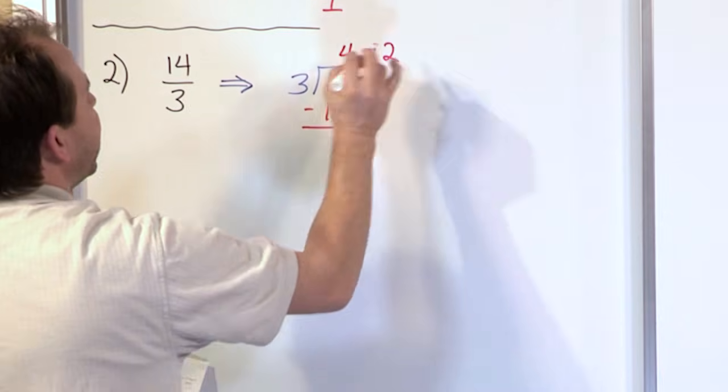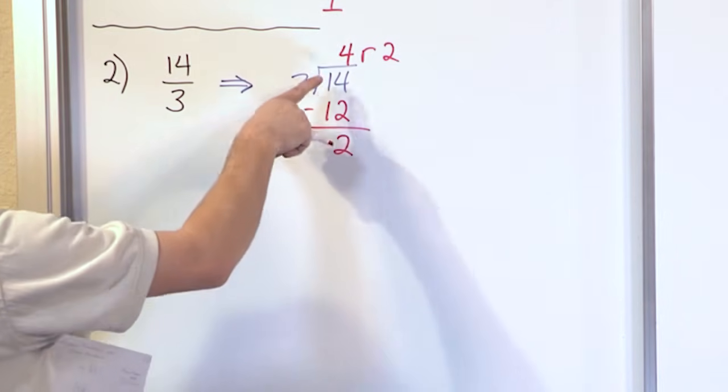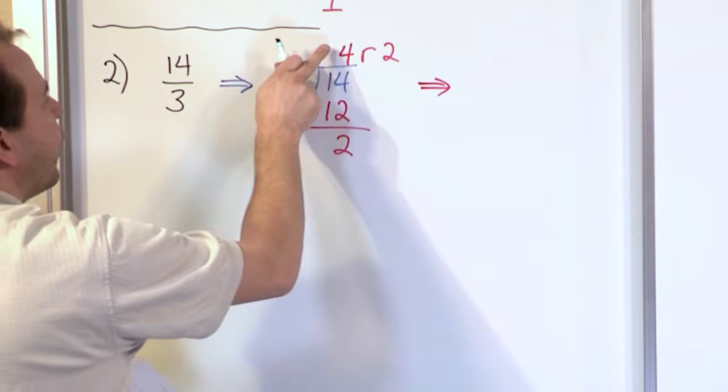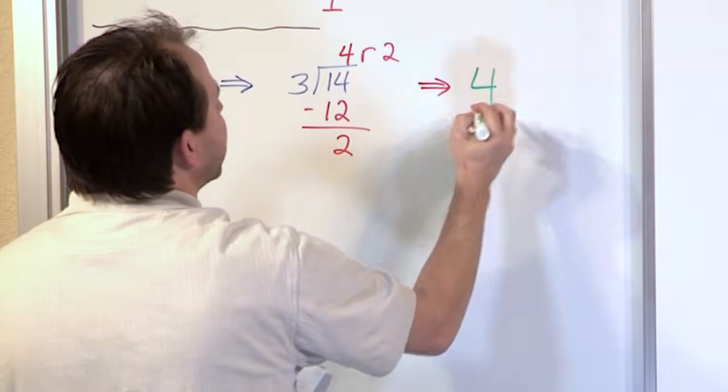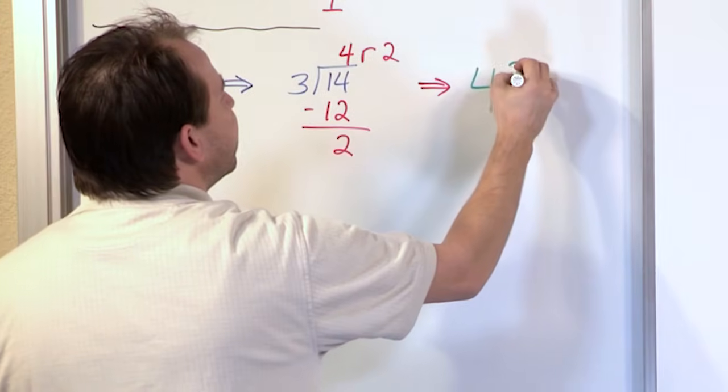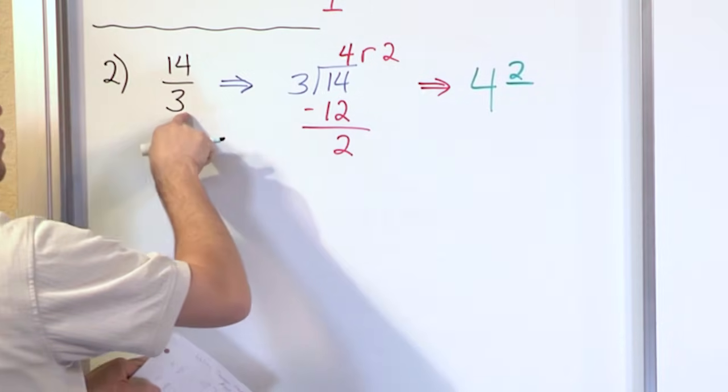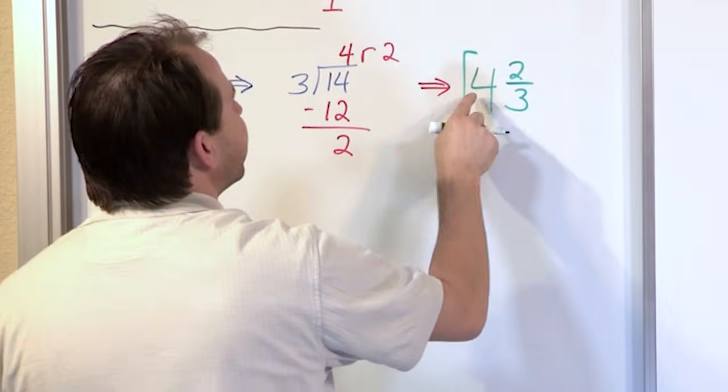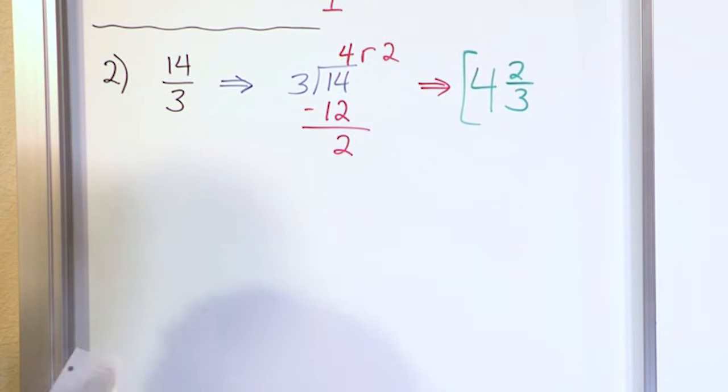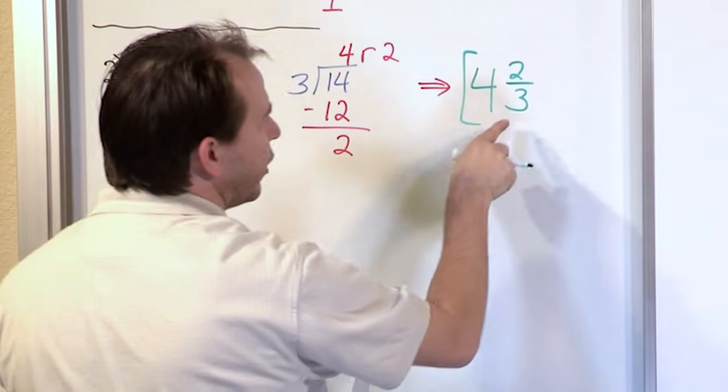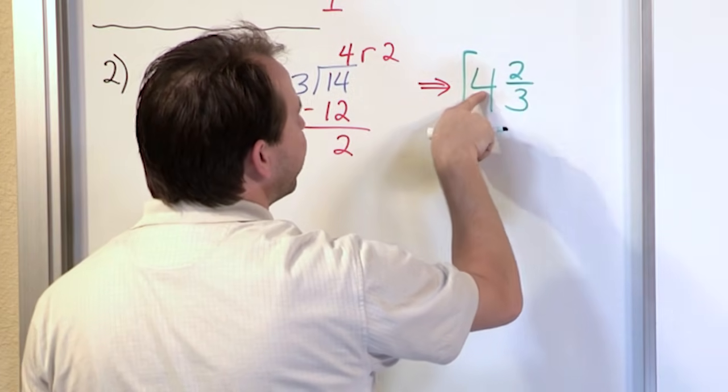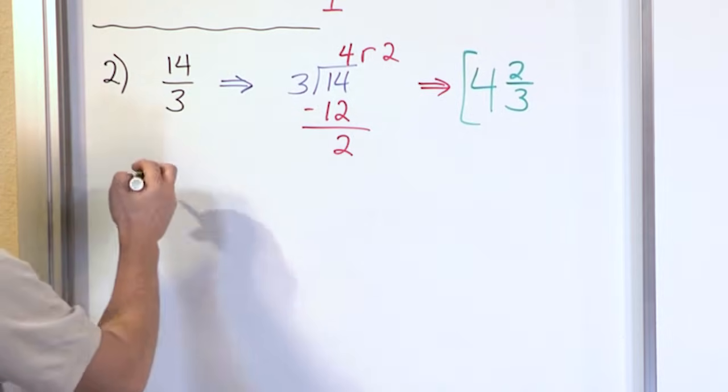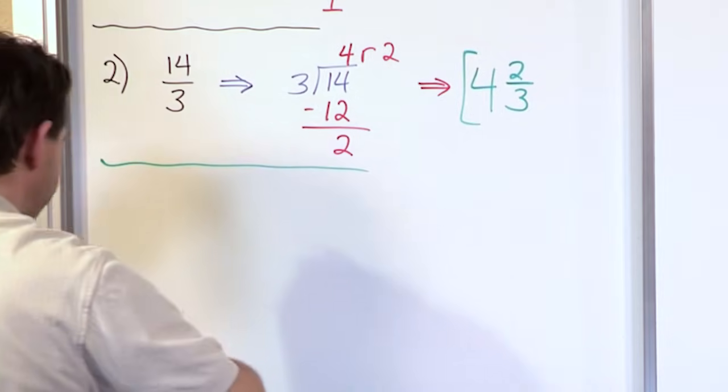When we subtract, you get a remainder of 2. So the remainder is 2. It goes 4 whole times, so the big 4 sits out front. The remainder is 2 and we write it over the bottom of the original fraction, which is 3. So the answer is 4 and 2 thirds. If you check: 3 times 4 is 12 plus 2 is 14.